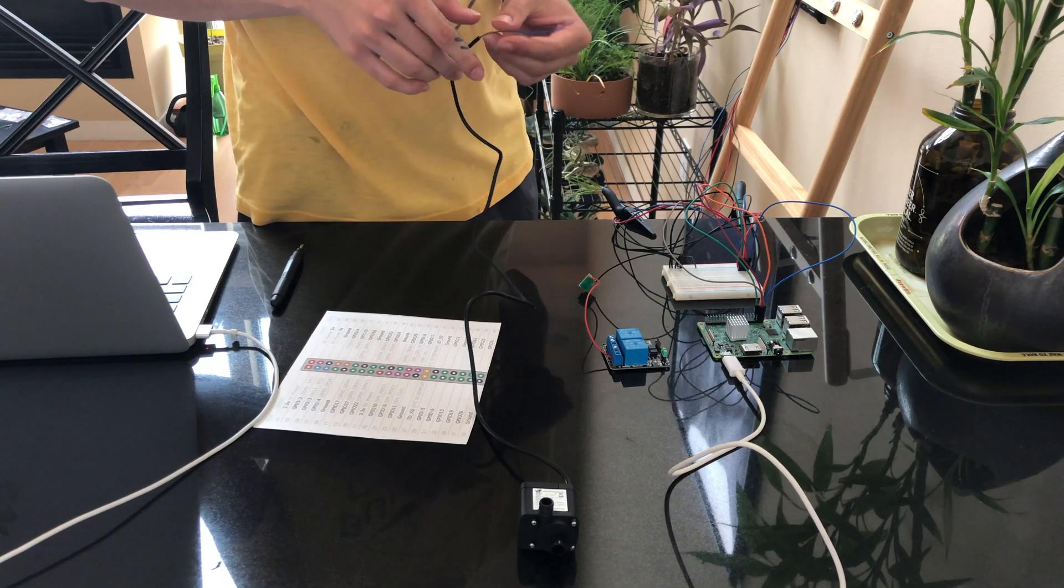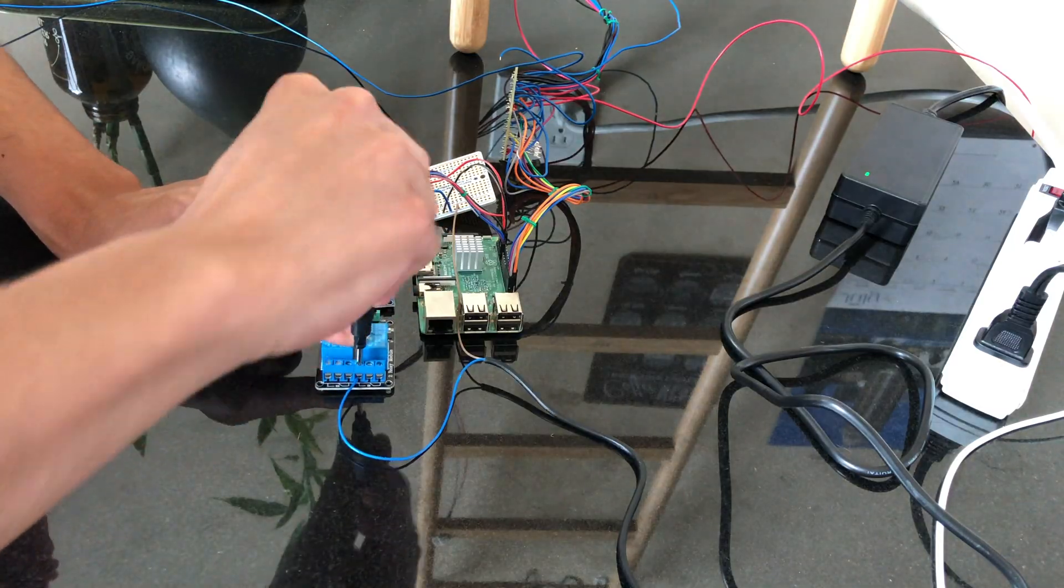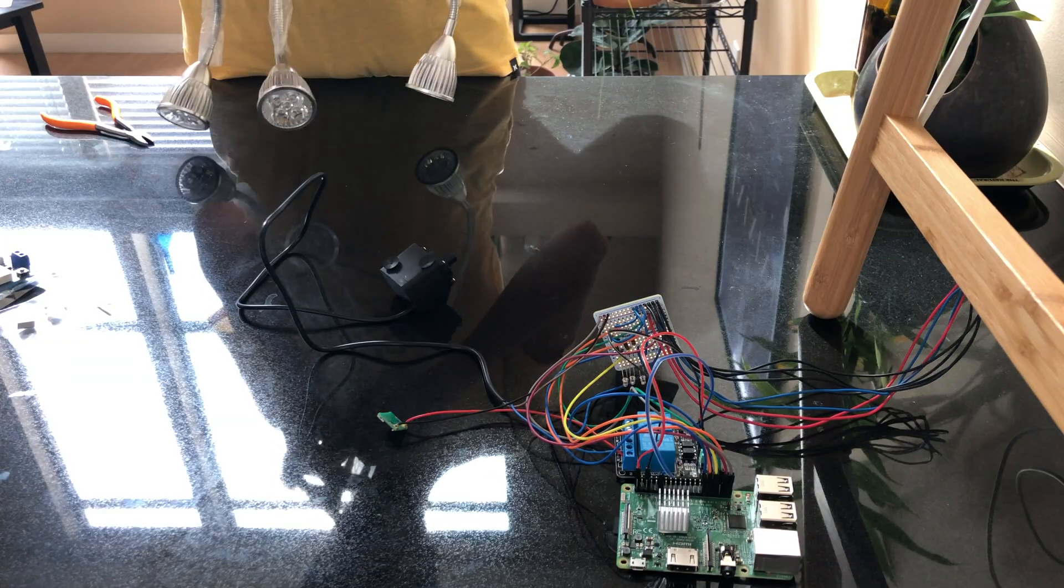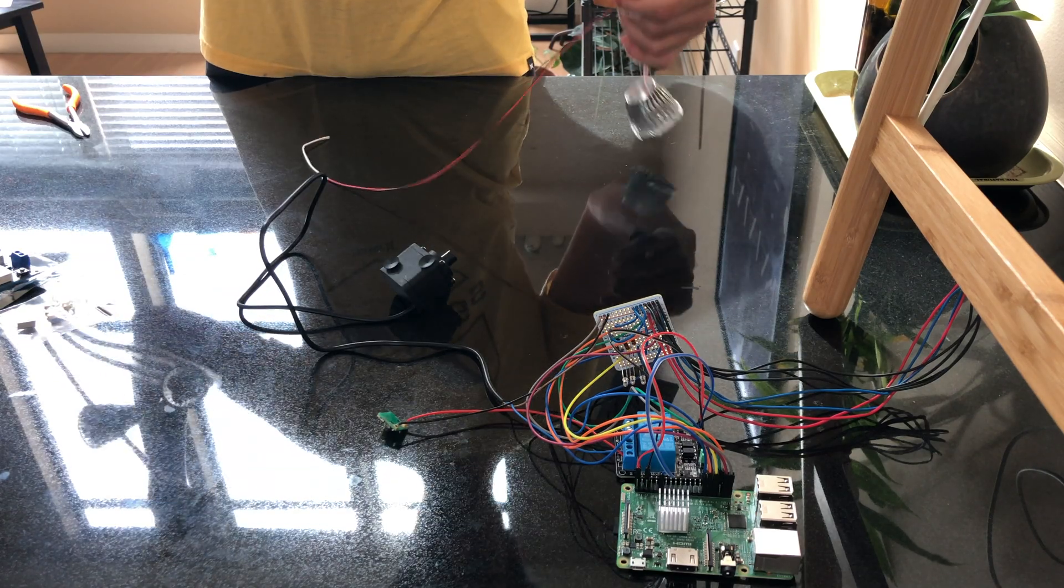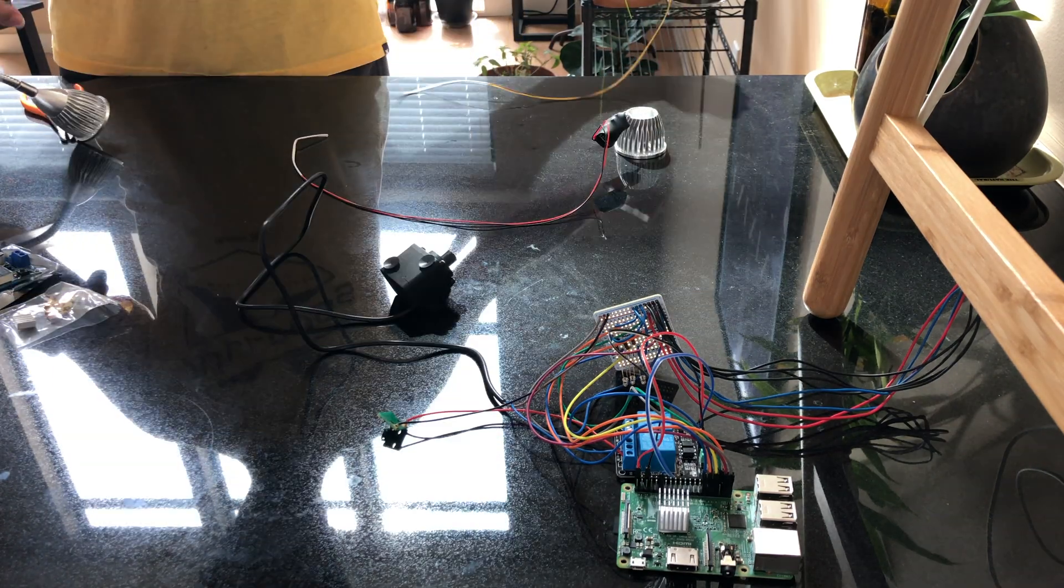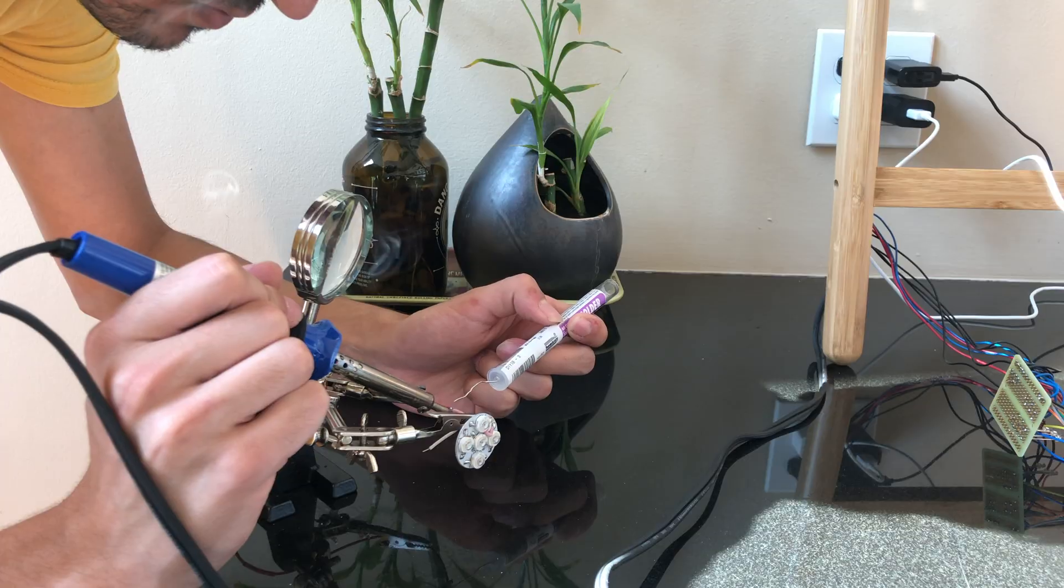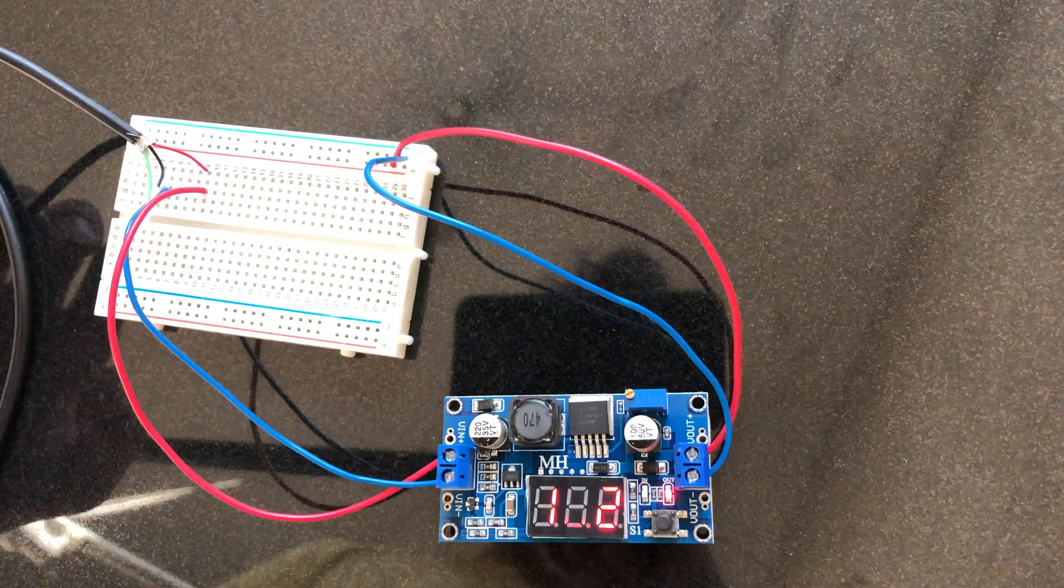For irrigation I'll be using a small 3.5 volt water pump. This will be connected to the first channel of a two channel relay allowing me to turn the pump on and off from the Raspberry Pi. I stripped these LEDs from some low wattage grow lights I found online.